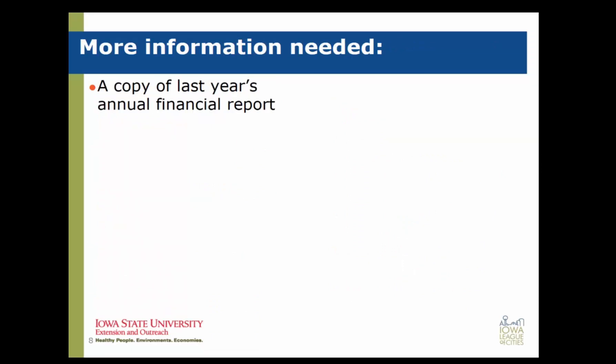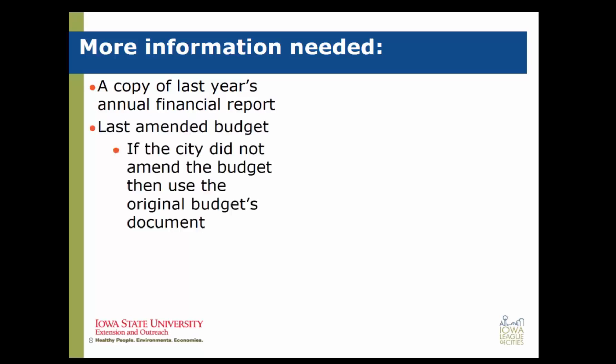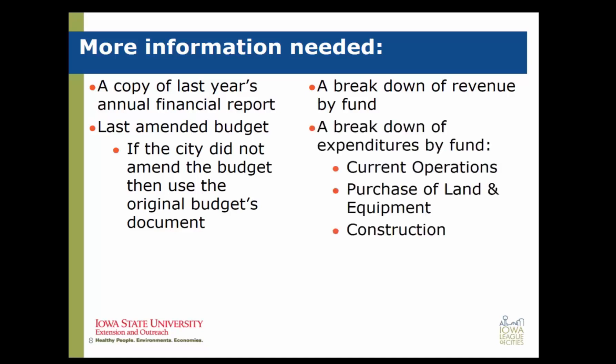You will also need a copy of last year's Annual Financial Report. If you don't have a copy handy, you can use the link on the Auditor of State's website to pull up previous reports. You will also need your last amended budget — if the city did not amend a budget during FY17, use the originally submitted FY17 budget document. Finally, you'll need a breakdown of your revenues by fund and a breakdown of your expenditures by fund. Your expenditures also need to be categorized into current operations, purchase of land and equipment, and construction.